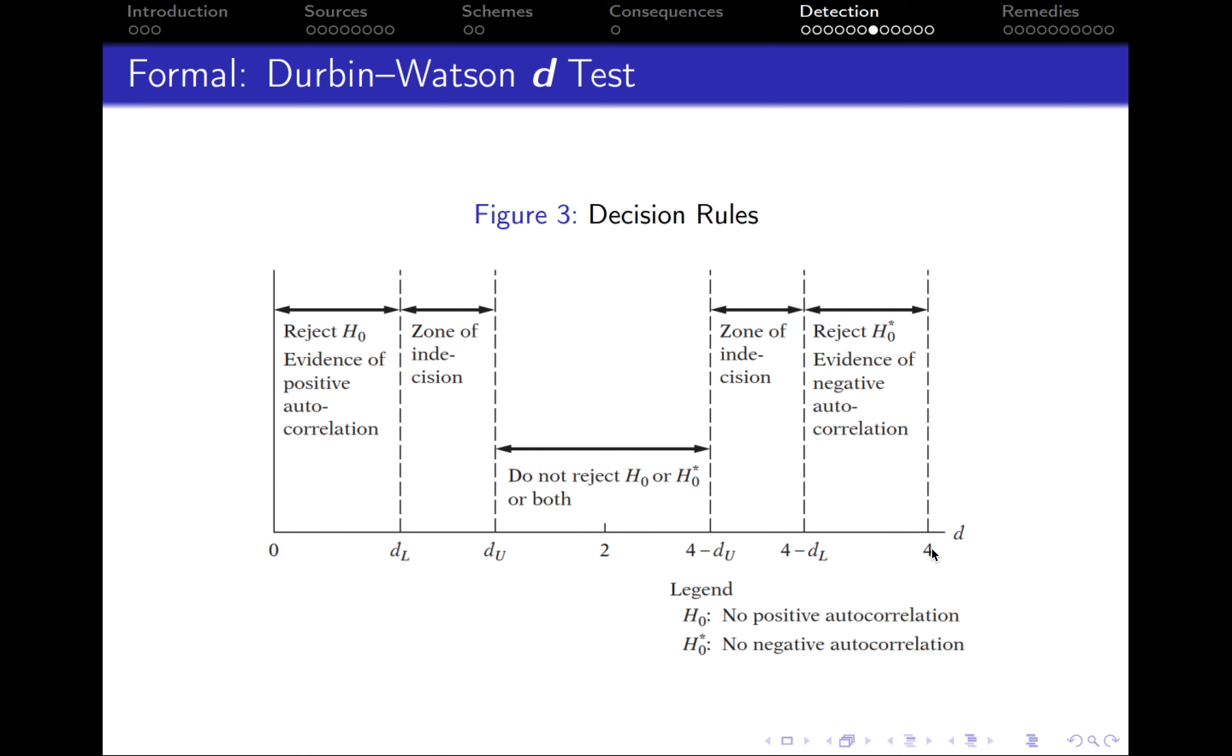And if we are between 4 and 4 minus DL, in this case, we reject the null that there is no negative autocorrelation, which means that there is negative autocorrelation.